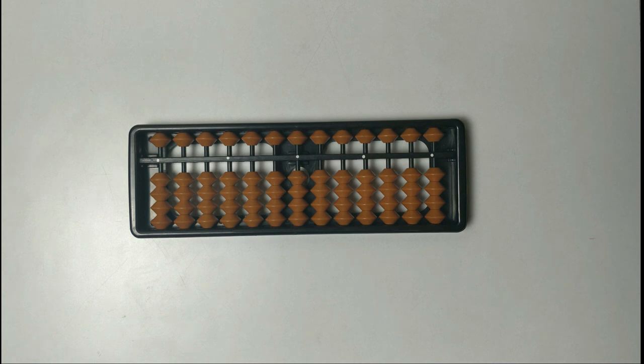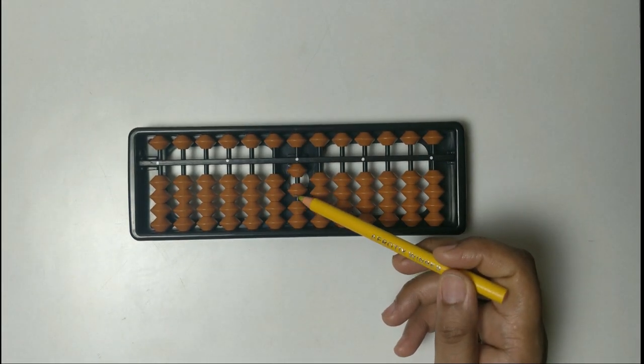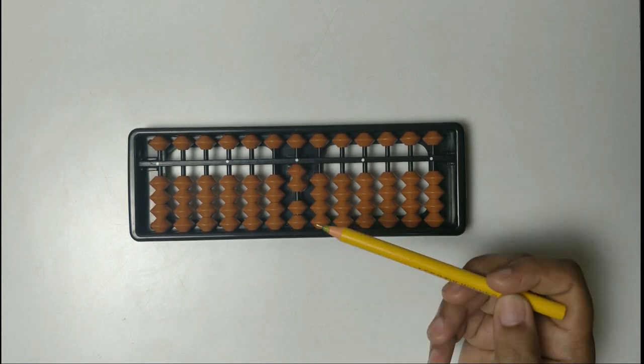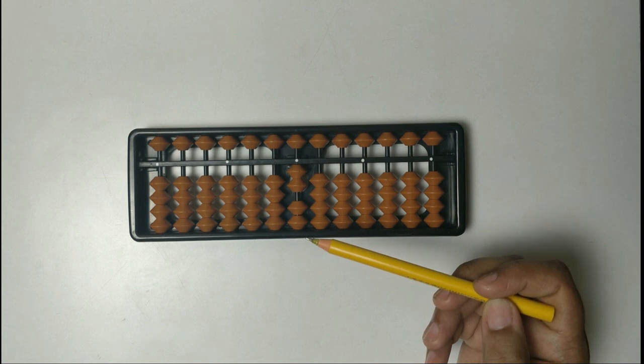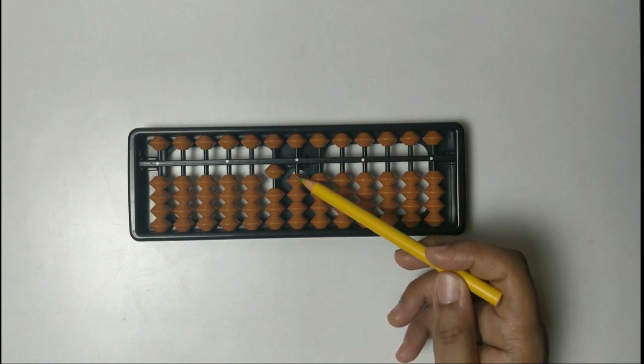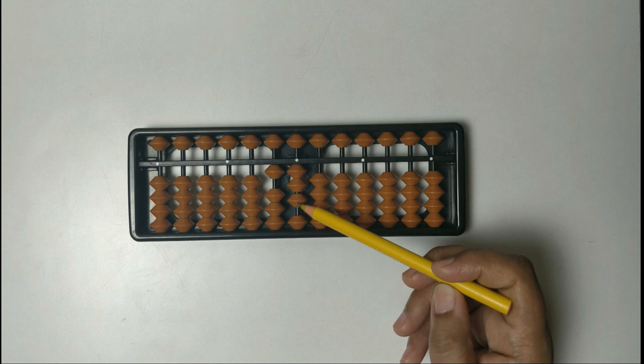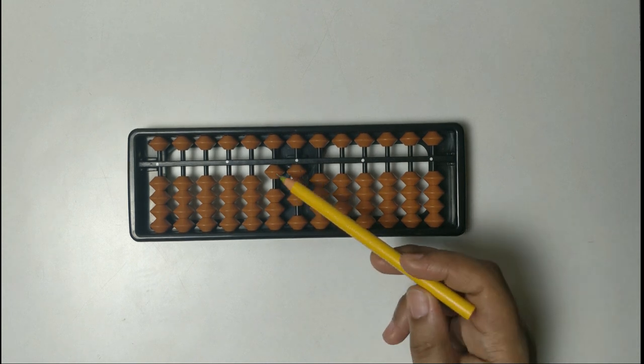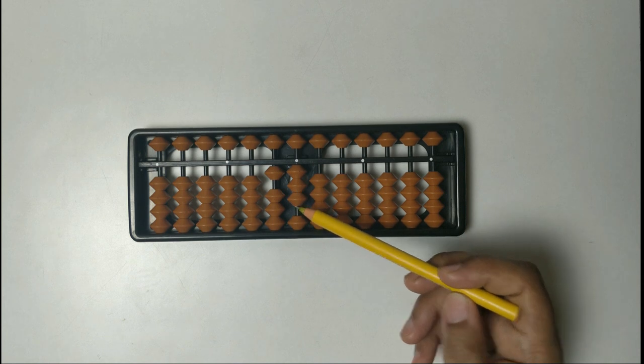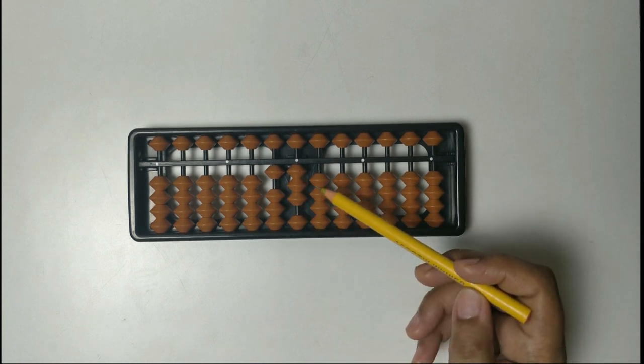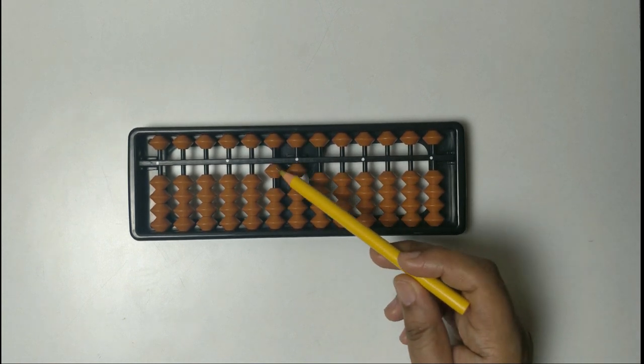Let's take one example. We need to solve 2 plus 8 plus 3. So 2: 1, 2. Plus 8: it's not possible to add 8 on this row, so what will you do for it? For plus 8, plus 10 minus 2. Then plus 3: 1, 2, 3. So what is the answer? 13. 10, 11, 12, 13. This arrangement of beads is representing the number 13.